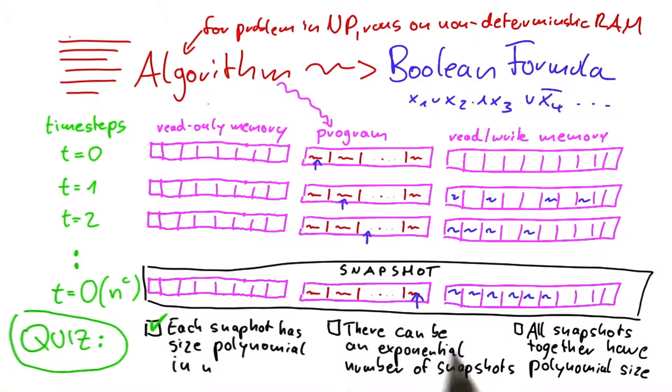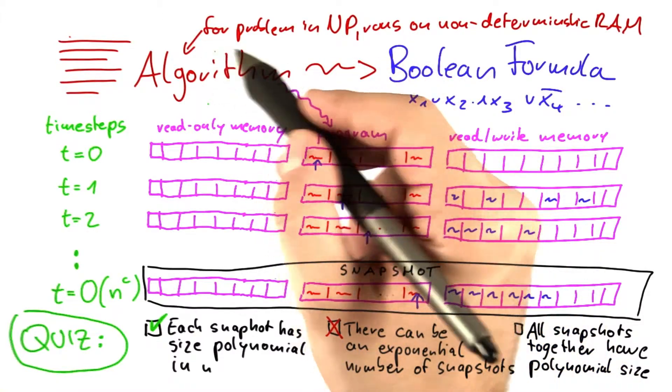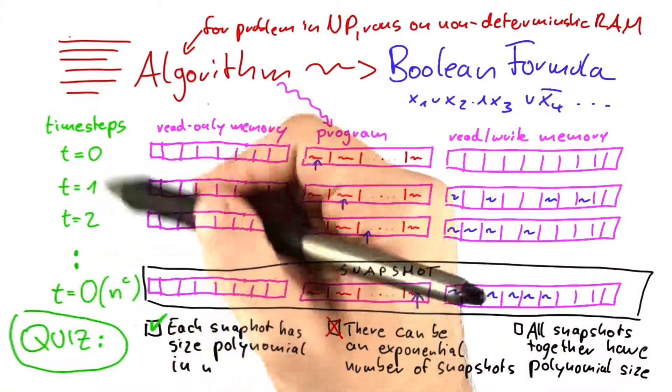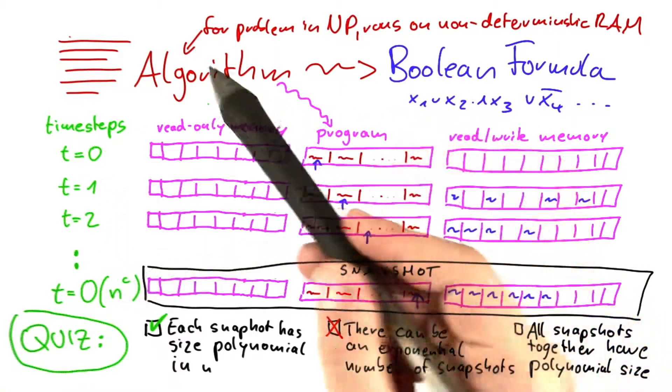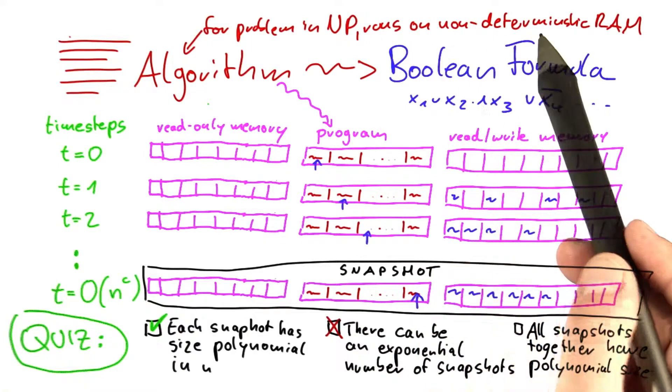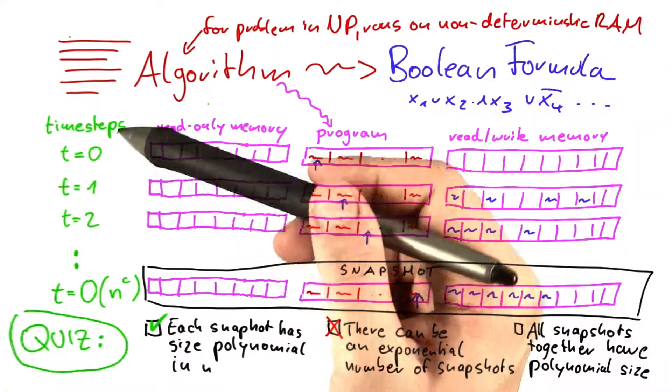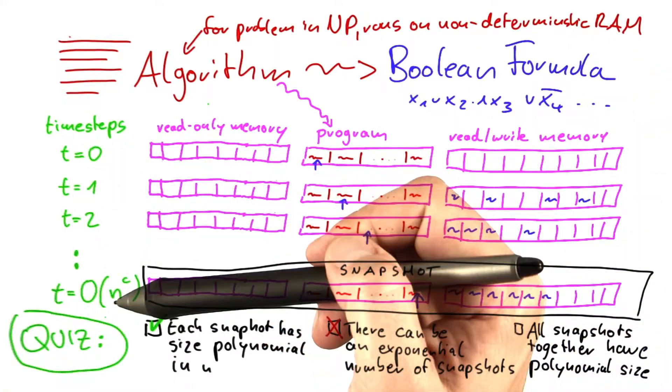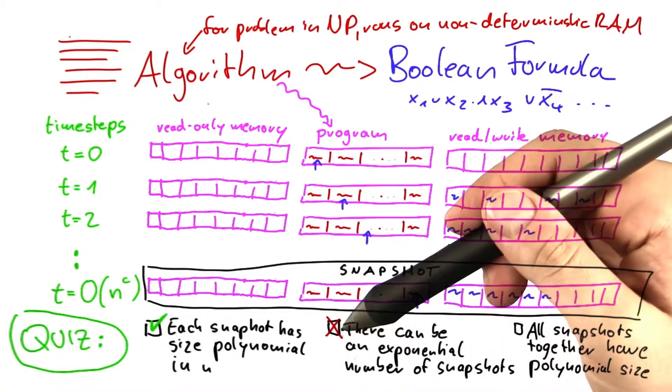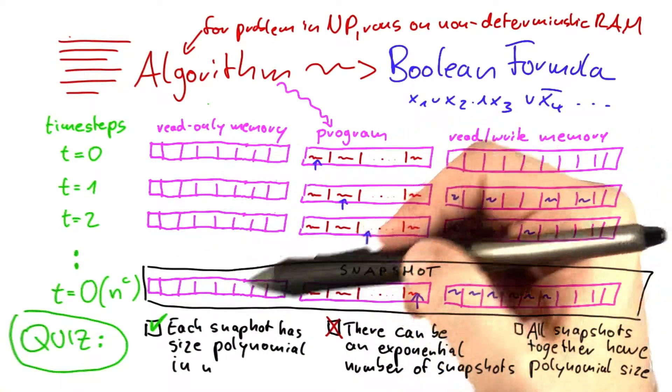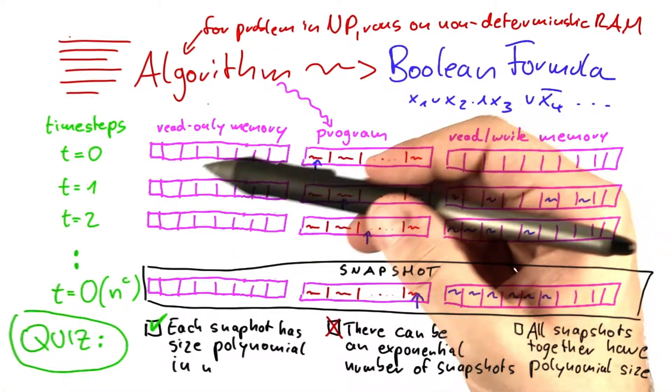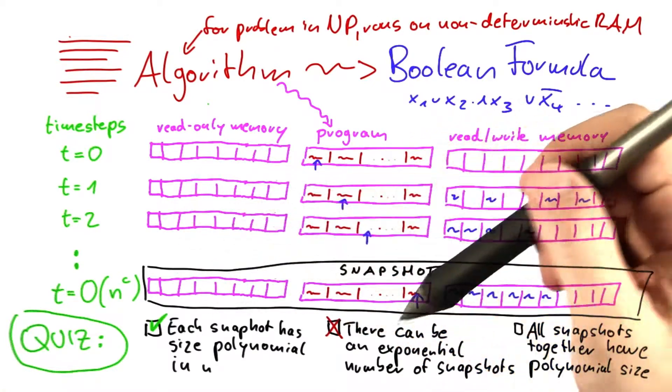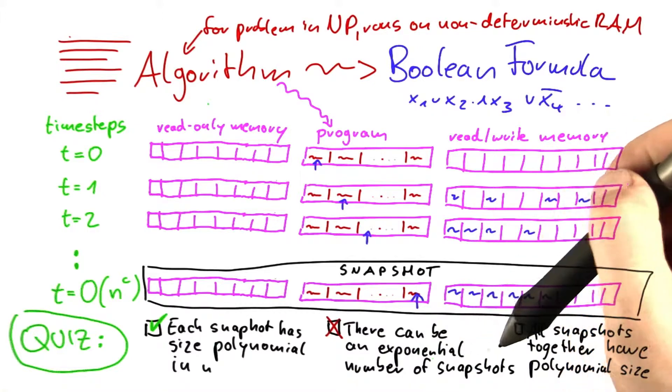Now, the second one, I think that was the easiest one to find out, is of course not true because we said we're looking at a problem in NP. We've even written it down here on the left side. So we said the number of time steps must be some polynomial because otherwise the problem wouldn't be in NP. And since we're running on a non-deterministic RAM, we can assume that the number of time steps here is bounded by some polynomial. So since there's only a polynomial number of time steps, there can also only be a polynomial number of snapshots. So there cannot be an exponential number of snapshots.